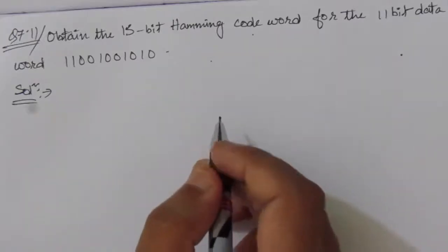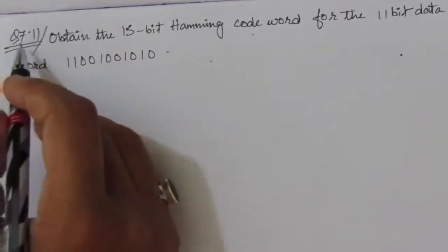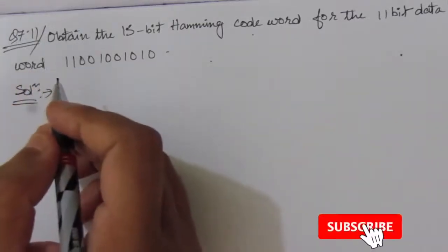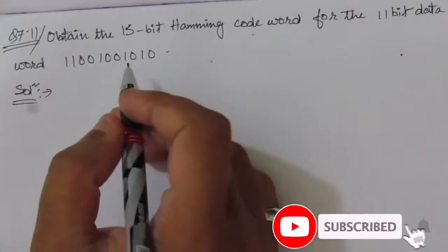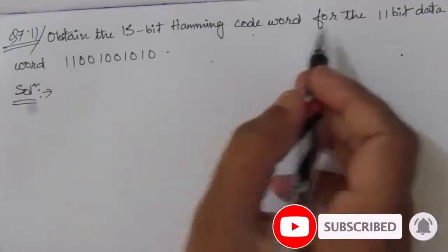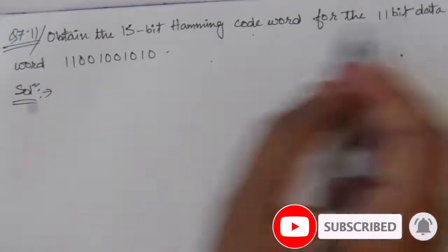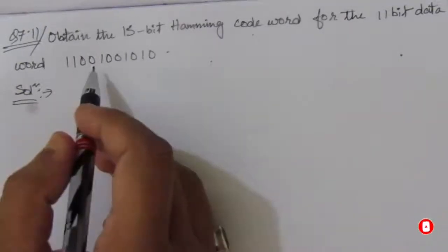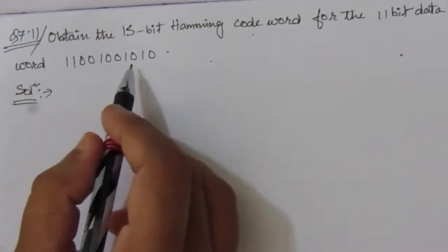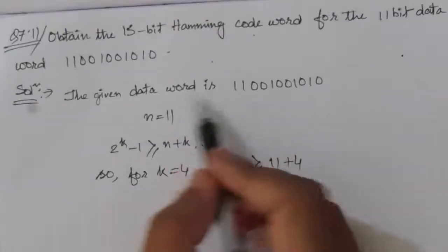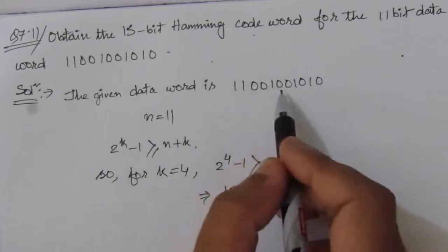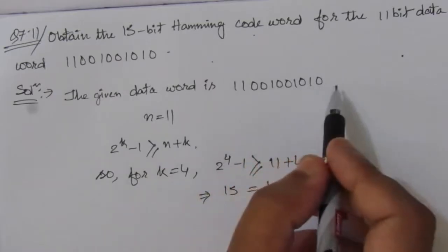In this video we will solve problem number 7.11 from chapter seven. The problem is: obtain the 15-bit Hamming code word for the 11-bit data word 11001001010.